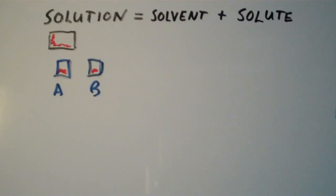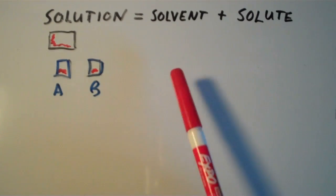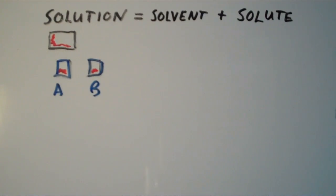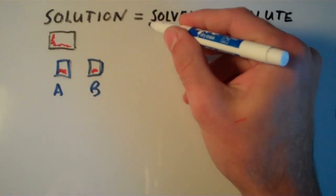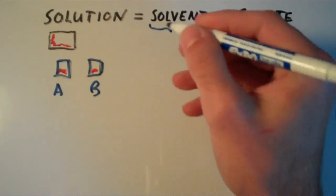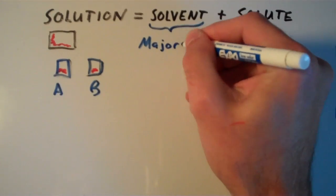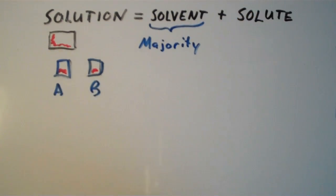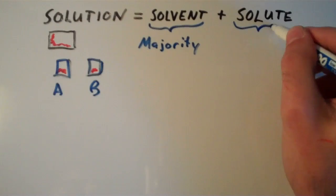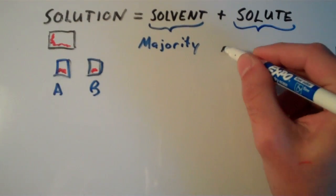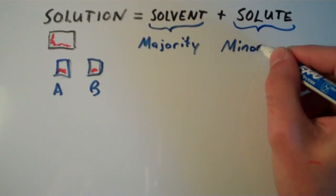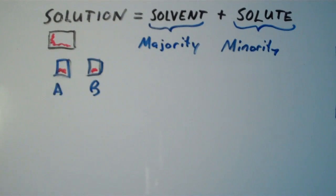Now a solution generally has two components, and those components are the solvent and the solute. The solvent of a solution, this is the majority component. So in other words, the solvent is the substance that does the dissolving and the solute is the substance that becomes dissolved.